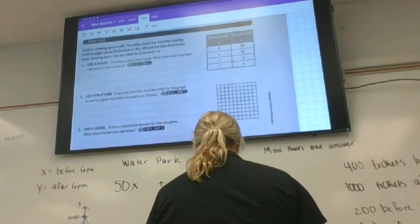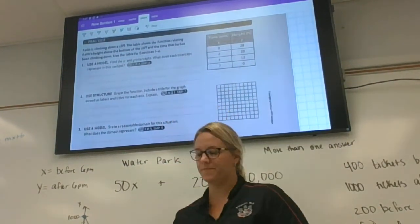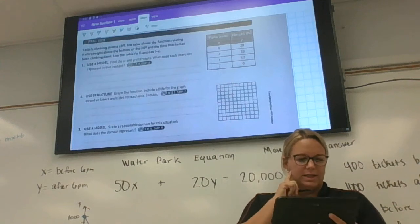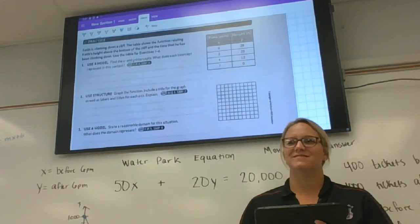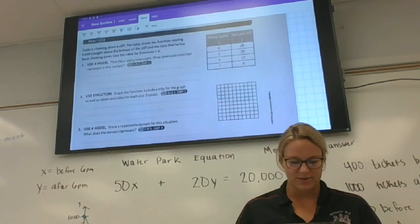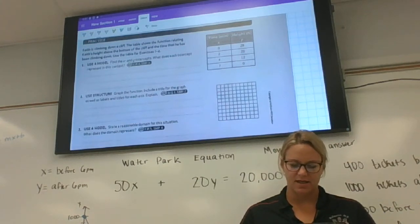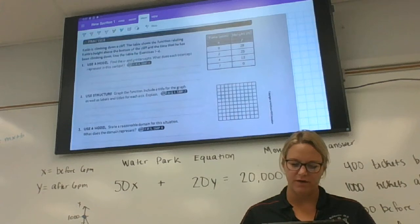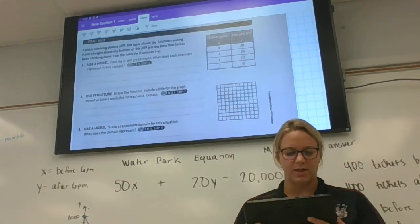I thought we'd go straight into another word problem. Cliff is climbing down a cliff. The table shows the function relating his height above the bottom of the cliff to the time that he has been climbing down.